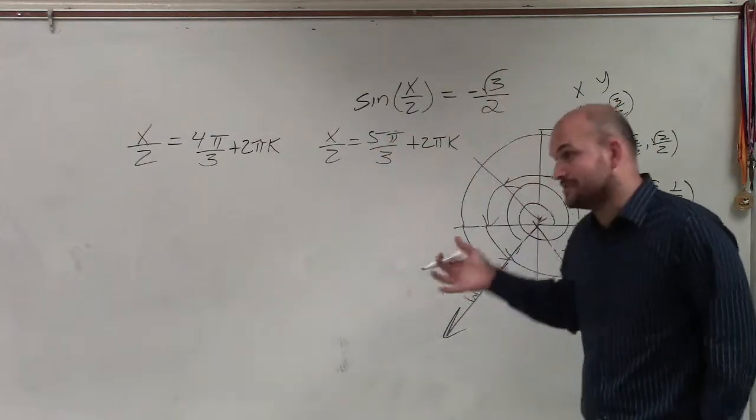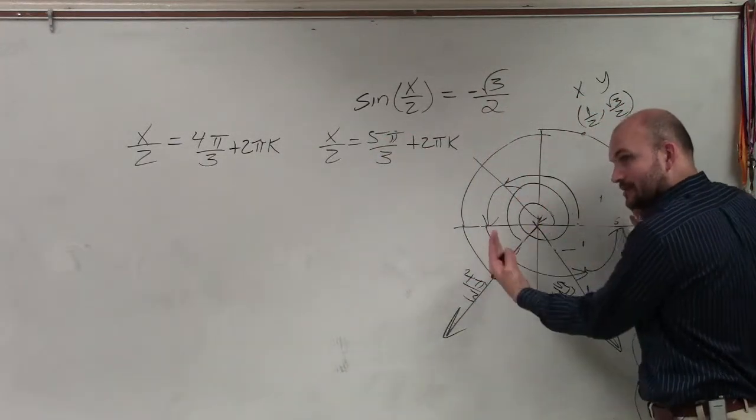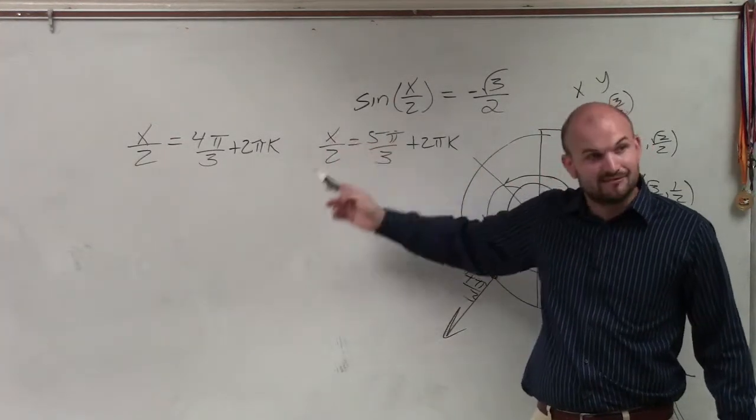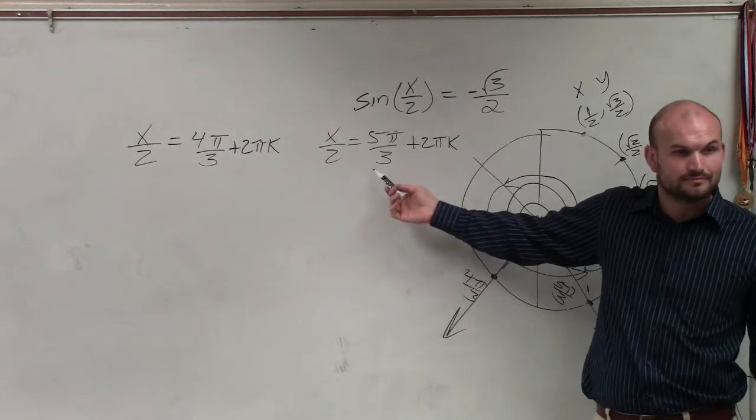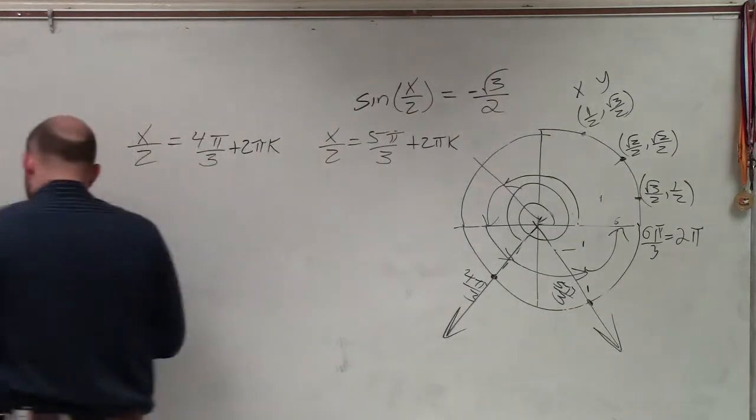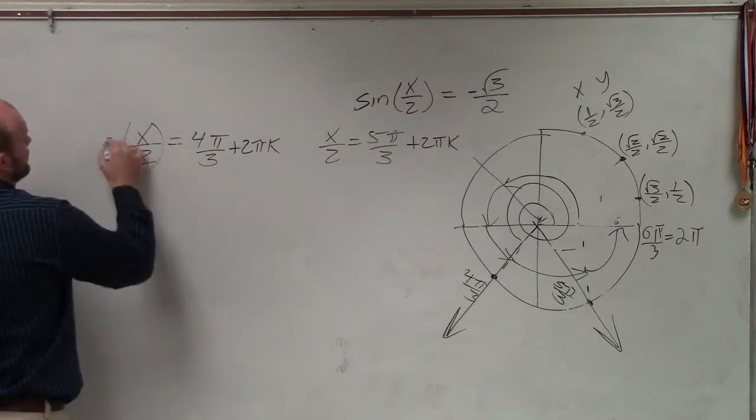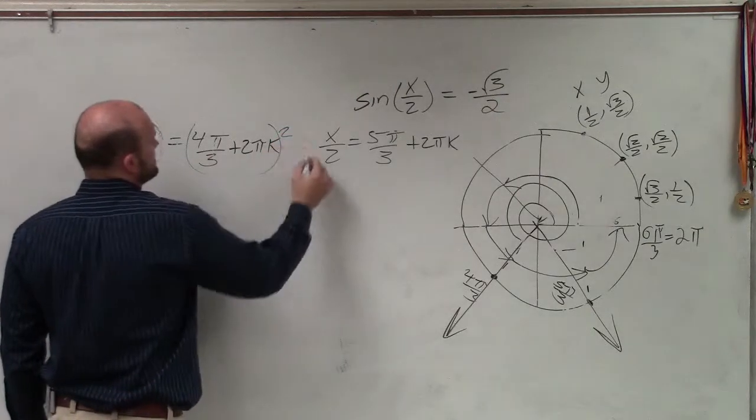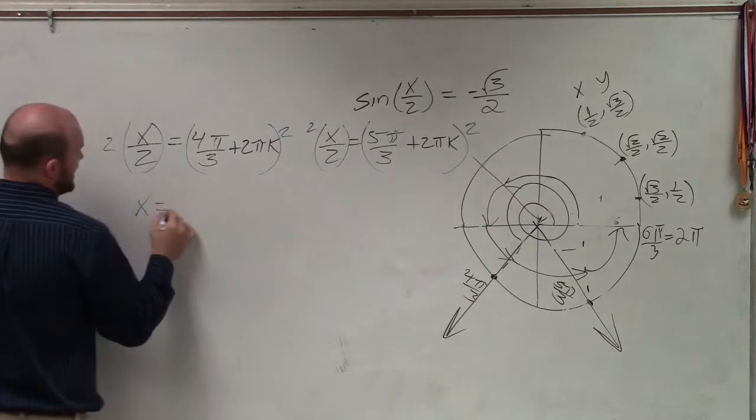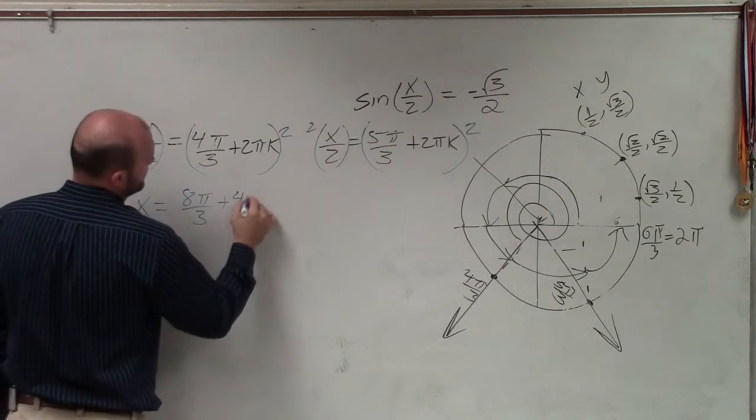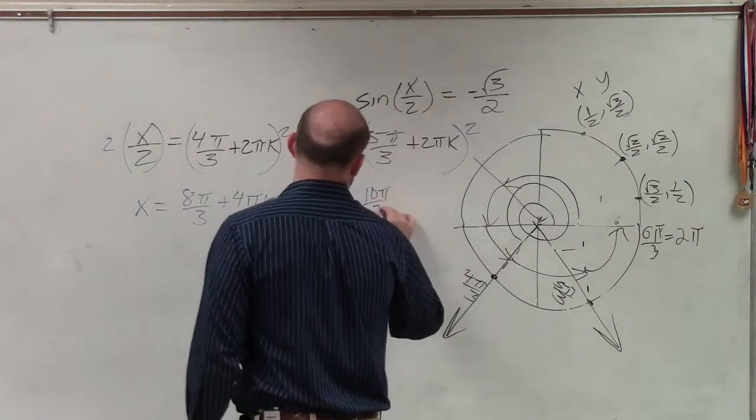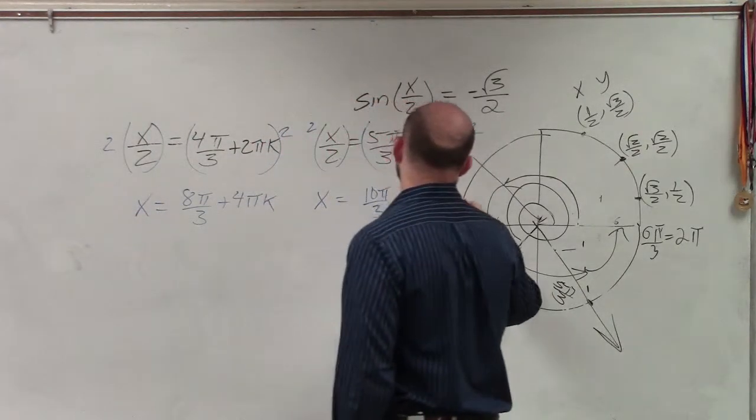So now to finish my answer, the first thing, treat it just like a regular equation. You solve for your variable, but it's not x, it's x divided by 2. You add in your 2πk, and now we solve for x. So to solve for x, I multiply by 2 on both sides. And therefore, my final answer is x equals 8π over 3 plus 4πk, and x equals 10π over 3 plus 4πk.